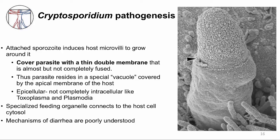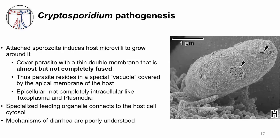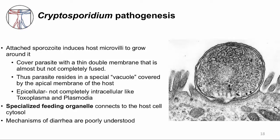The membrane does not completely fuse — the arrow shows where some openings remain. Thus, the sporozoite resides in a special vacuole but is not truly intracellular like its cousins Toxoplasma and Plasmodia; it is epicellular. The sporozoite also has a special organelle that connects to the enterocyte to get nutrition, called a feeding organelle, and the arrow points to it in the image.